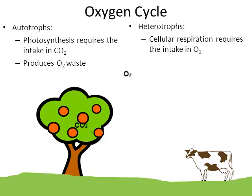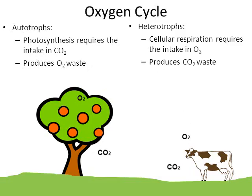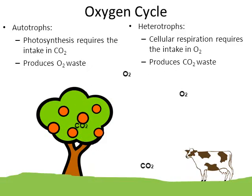Then come the heterotrophs, represented by a cow. Heterotrophs include not just animals, but also fungi, decomposers, and bacteria. Through cellular respiration, oxygen is inhaled — the oxygen that came from photosynthetic organisms. Cellular respiration is the process that makes ATP, adenosine triphosphate, and oxygen is one of the reactants. The cow is then exhaling carbon dioxide, because carbon dioxide is a waste product of cellular respiration. So we have a straightforward cycle: the cow gives off carbon dioxide, taken in by the plant; the plant gives off oxygen, taken in by the cow.